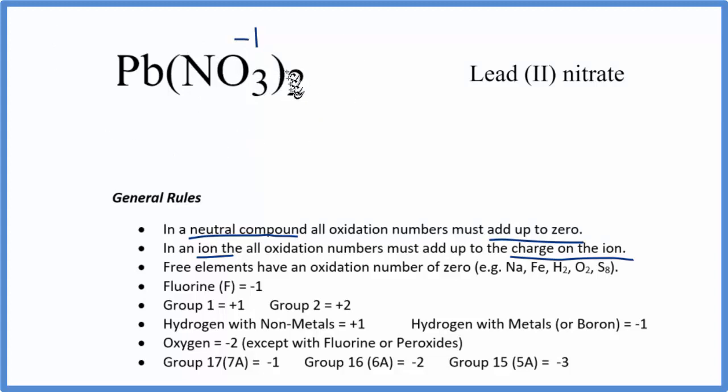Because everything has to add up to zero, I have two nitrates. So I have two times minus one. This is going to be minus two. The lead has to be plus two for these to all add up to zero. So these are the oxidation numbers for the lead in lead (II) nitrate.